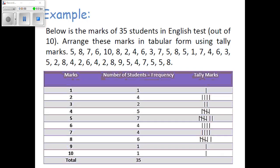Now this is the example. Below are the marks of 35 students in an English test out of 10. Rank these marks in tabular form using tally marks: 5, 8, 7, 6, and so on.